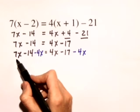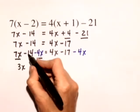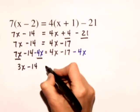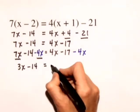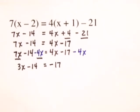On the left-hand side, 7x minus 4x gives us 3x, and we have minus 14, is equal to, on the right-hand side we just have negative 17, since the 4x minus 4x adds to 0.